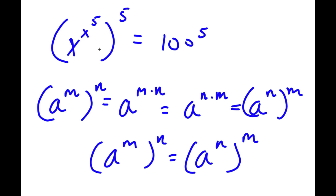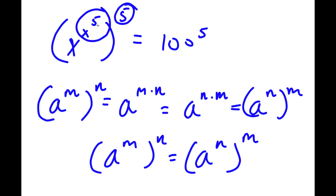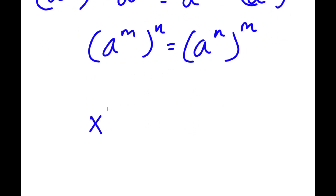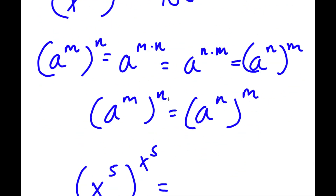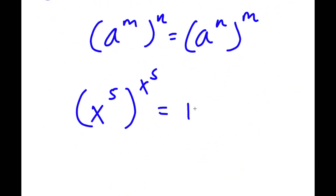So in this case, I have x to the power of x to the power of 5, all to the power of 5. I can think of x to the power of 5 as m and 5 as n. So if I switch these two places, I get x to the power of 5 to the power of x to the power of 5.